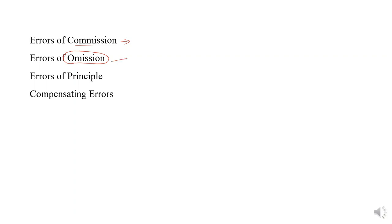Errors of omission — as the word itself tells you — means omitting, leaving out a particular transaction. This omission can be either partial or complete. Complete means we are omitting a particular transaction fully. Partially means we are omitting only a part of the transaction, recording only part and omitting the rest. Then errors of principle — in accounting we have certain basic principles. If a transaction is entered by violating the accepted principles of accounting, that is called an error of principle.